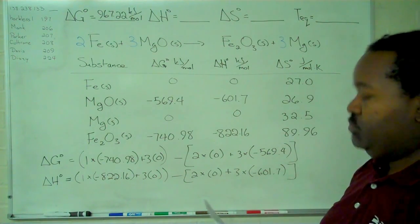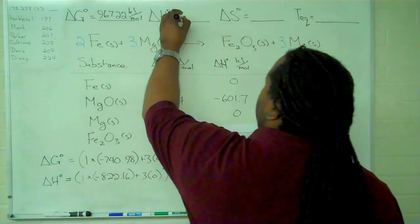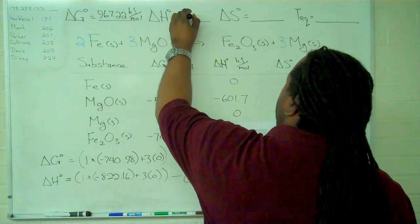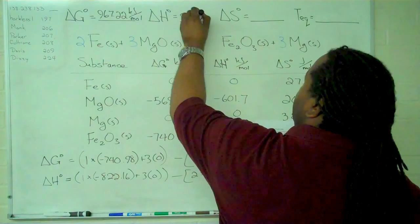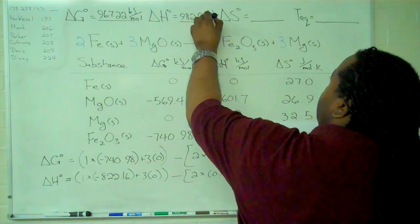So if we were to multiply this through and solve for it, we get 982.94 kilojoules per mole.